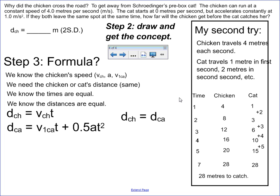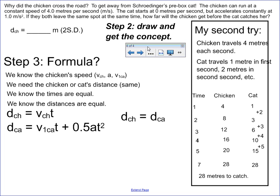Hopefully you've done that — if not, pause and do it. Now, pause and see if you can follow the formula method in the problem-solving handout: pick a formula, put the equations together algebraically, and solve for the numbers. We really haven't tackled it yet formally, though it is grade 10 math. Step 3 is the formula. We know the chicken's speed, the acceleration of the cat, and the initial speed of the cat which is 0. We need the distance — we can solve for either the chicken's or the cat's, since they are the same. We also know the times are equal and the distances are equal.